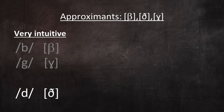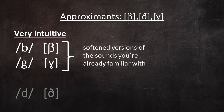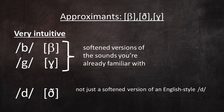Spanish D, however, is articulated quite differently from its English counterpart. Spanish fricative D is pronounced with the tip of your tongue between your upper and lower front teeth, just like English voiced TH in words like 'weather' and 'clothing.' This is a very important point, and I can't stress it enough. While approximant B and G can be thought of as just softened versions of the B and G sounds you're already familiar with, fricative D is not just a softened version of an English-style D. It's articulated with the tongue in a completely different part of the mouth — it's pronounced just like the English voiced TH.